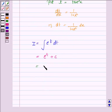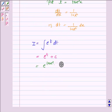Substitute the value of t. Now t is tan inverse x, so this becomes e to the power tan inverse x plus c.